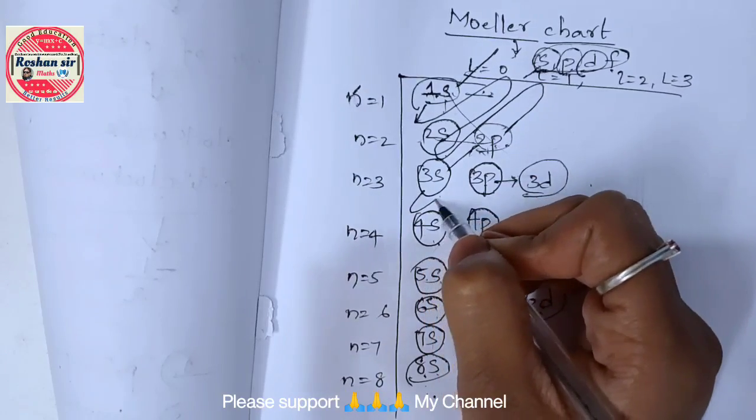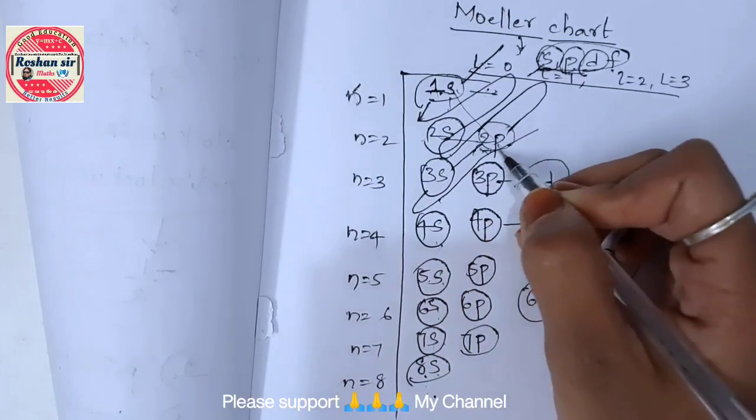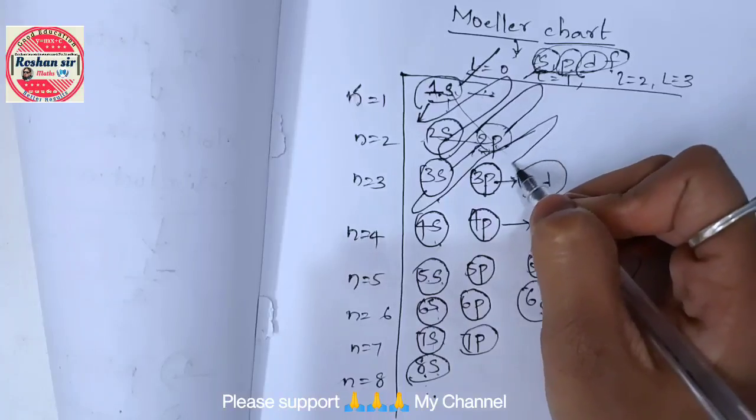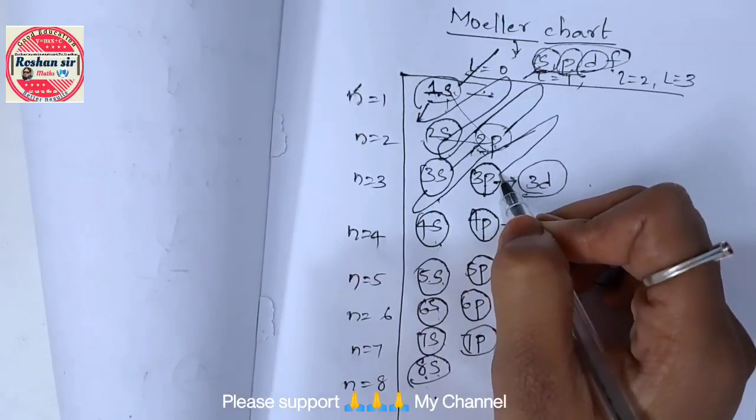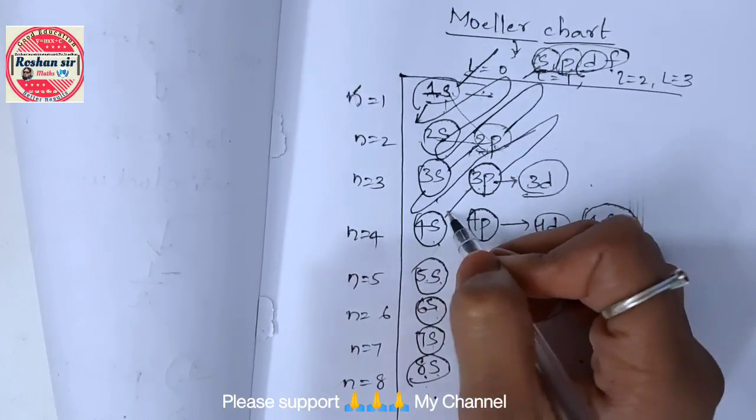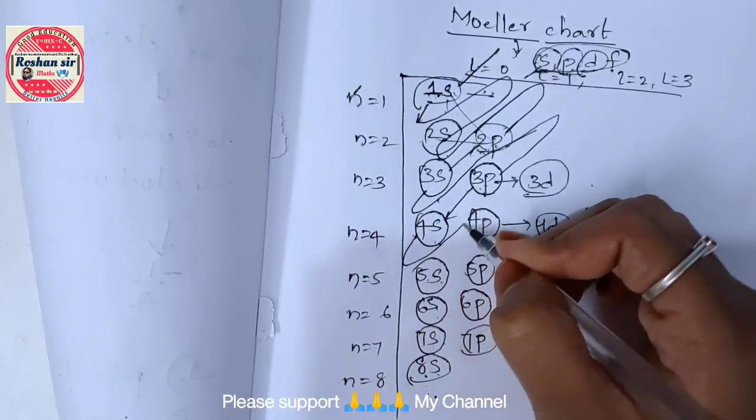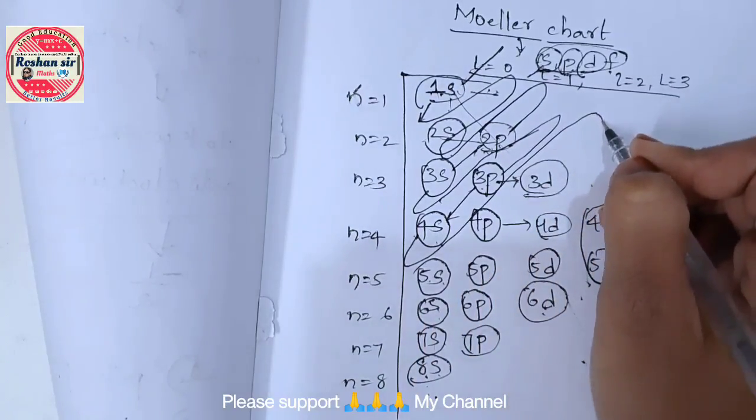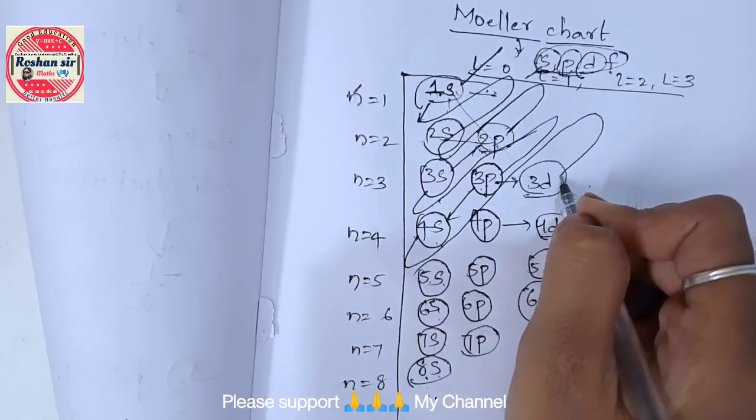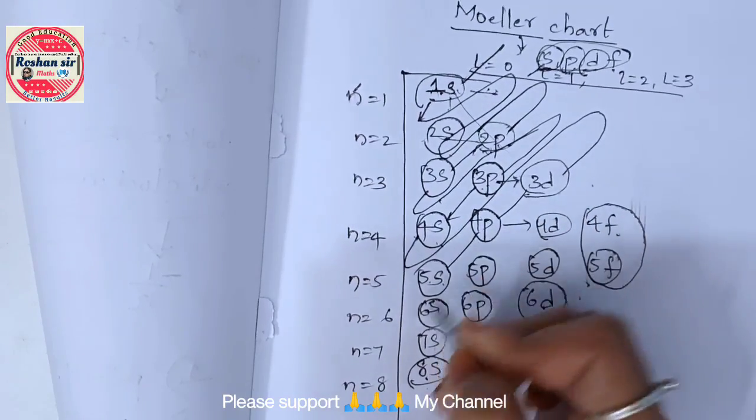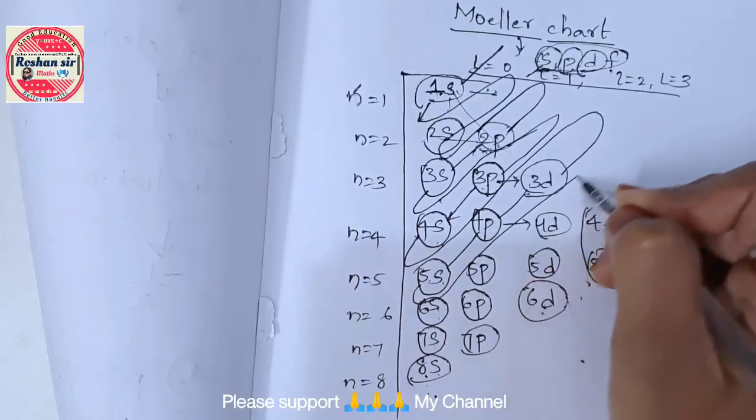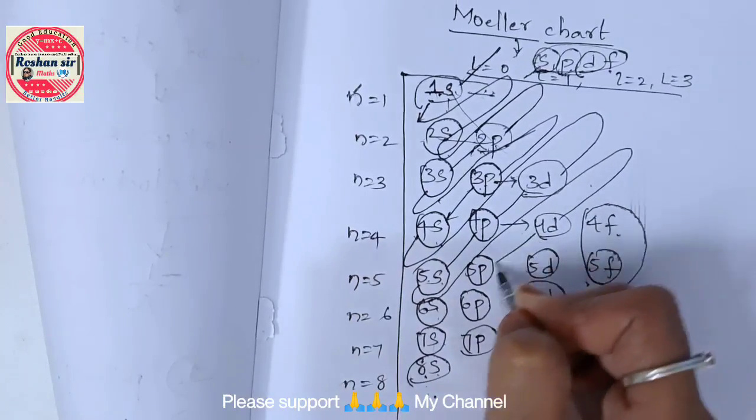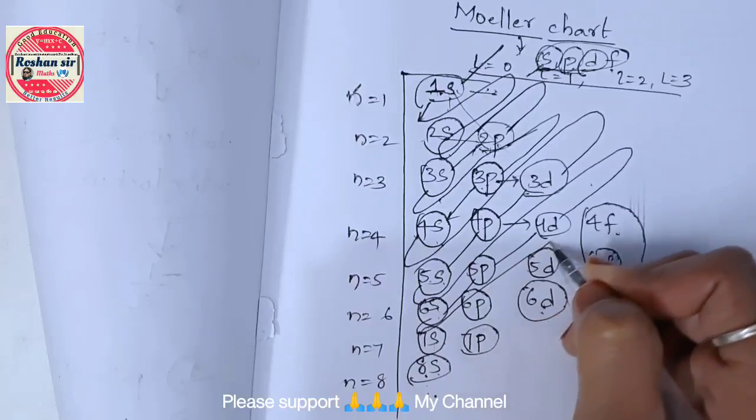This arrow should go from the middle of these numbers and it has to interact with 2p and 3s. Same, in the middle it has to go up and then it has to come back to 3p then 4s. Same from middle you have to take this arrow and then it has to come here.